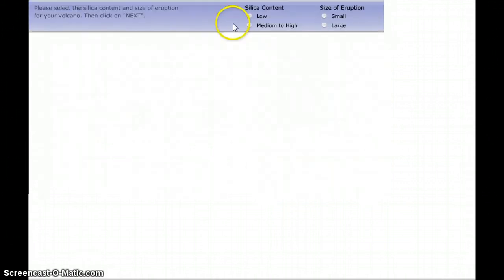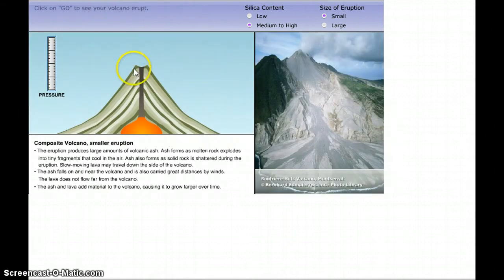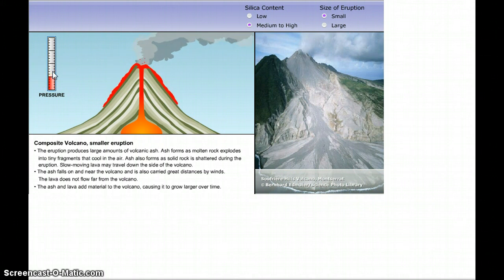If we go to the next one, the next type, we go with a medium to high silica content, a little bit thicker magma but a small size. You're looking at a composite volcano, smaller eruption. Just kind of notice small eruption so it's not really shooting out. It's thick so it's going to be moving really slow down the side. So it takes a little bit longer for the pressure to be released and eventually it dies off and the ash and everything fall down to the side and they become part of the side of the mountain as well.